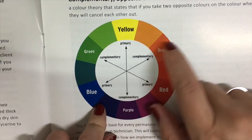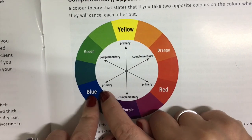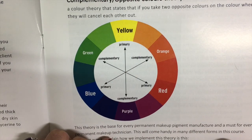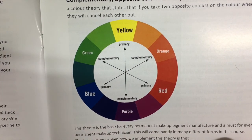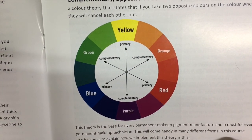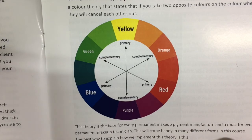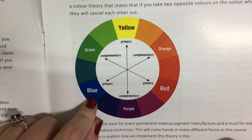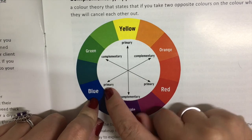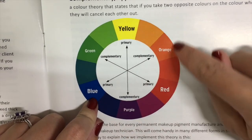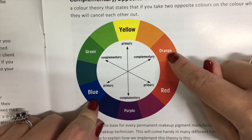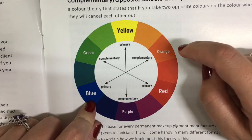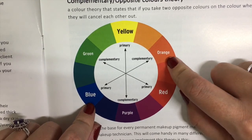So it's always important to know what color is on the opposite side of the color wheel. We also use this when we do lips, for example. A lot of people have a blue undertone on their lips, so I will first do a layer of pure orange pigment, and only then apply whatever lip color I want to use on them.